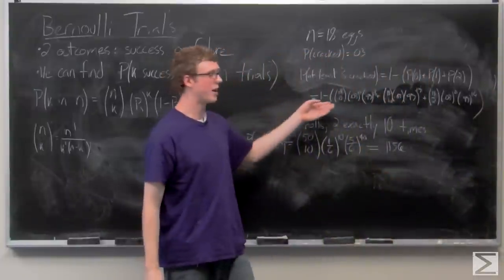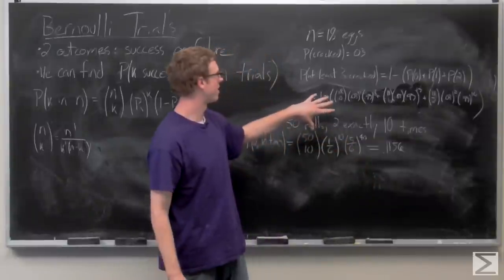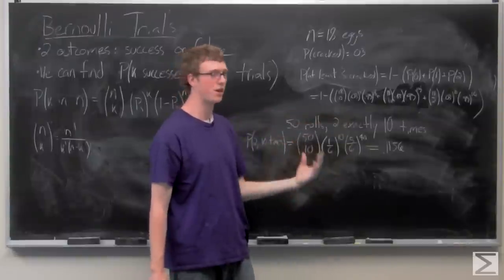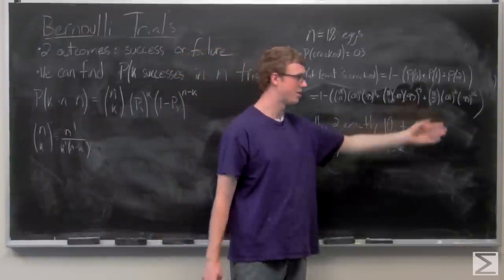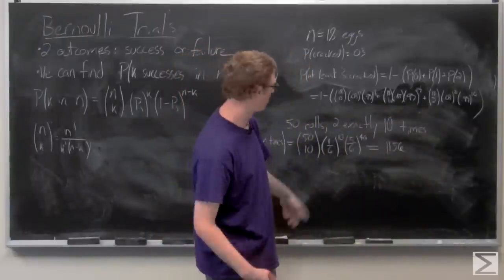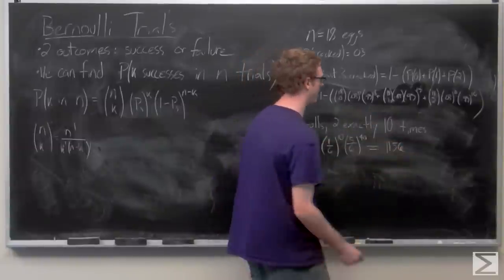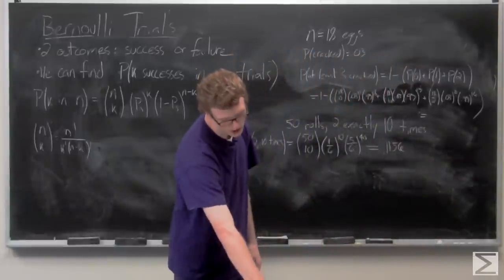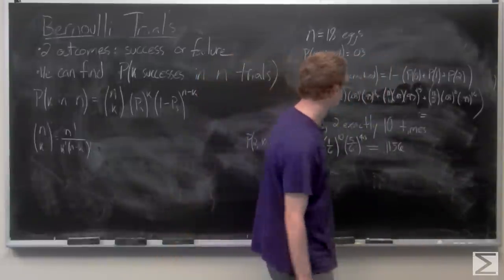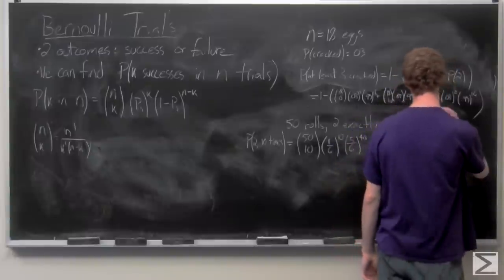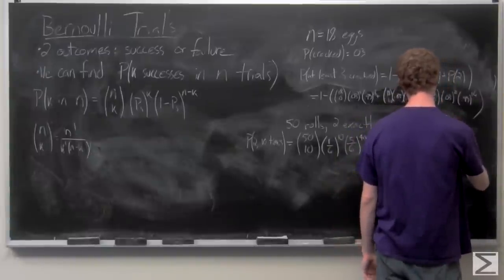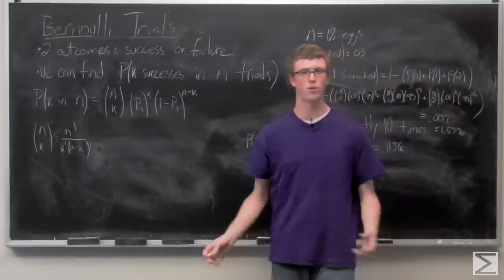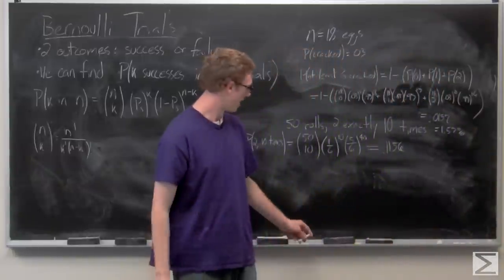So for the total amount of eggs, we can find out if at least three are cracked by finding out the probability of one being cracked, zero being cracked, and two being cracked. You're going to need to go ahead and calculate all these out and then subtract from one. But the final probability is going to be 0.0157, which is just a 1.57% chance that at least three eggs are cracked.